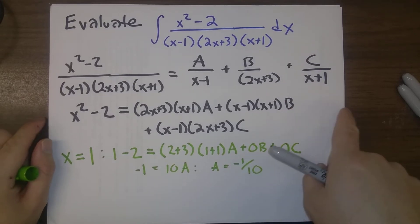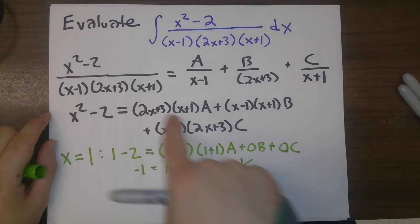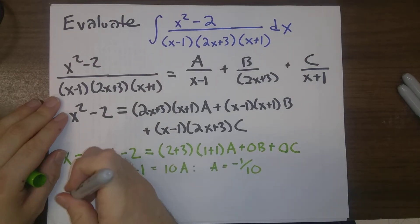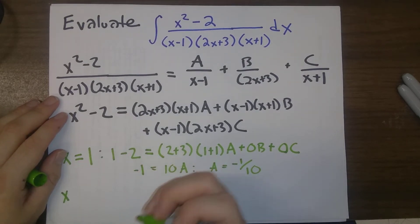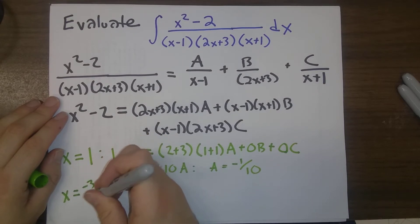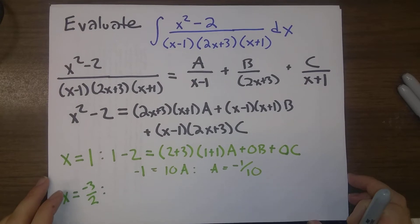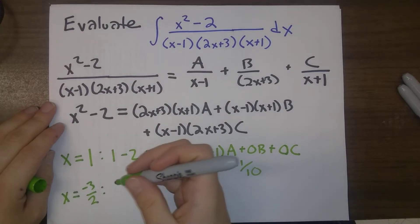Okay, so that took care of A. In order to find what B is, we want that 2x plus 3 term to equal 0. How do we make 2x plus 3 equal to 0? We use x is equal to minus 3 halves. And so, if we plug in x is minus 3 halves.